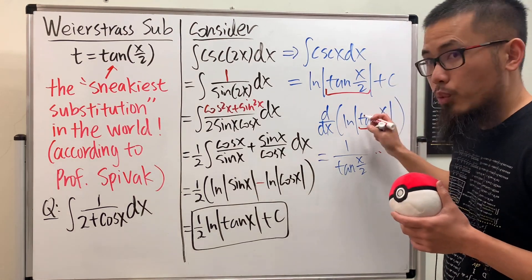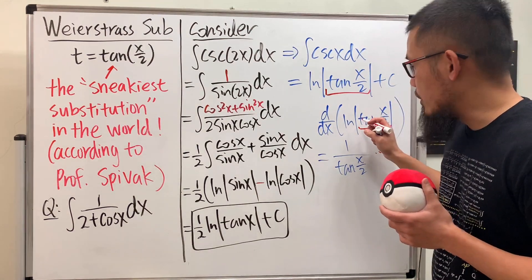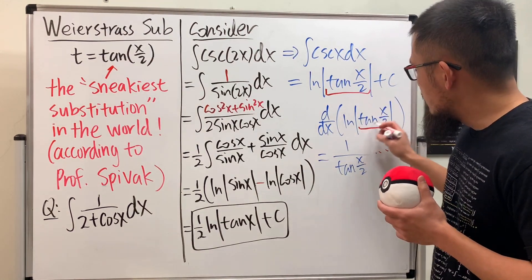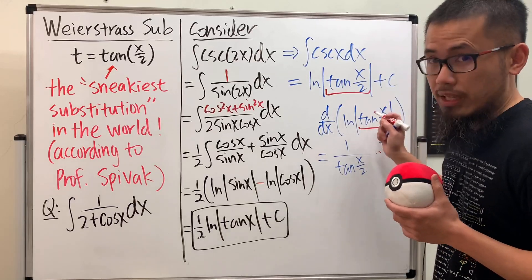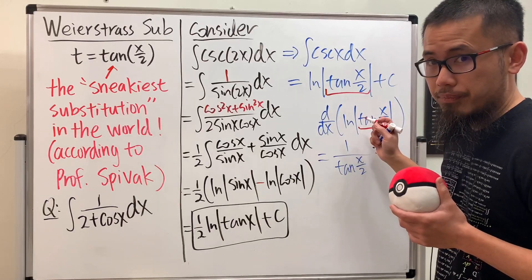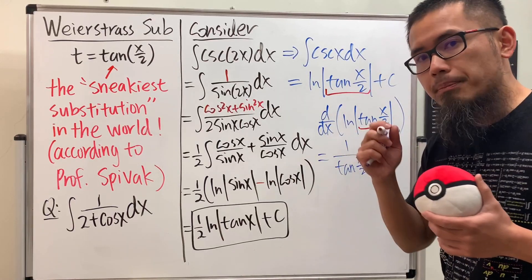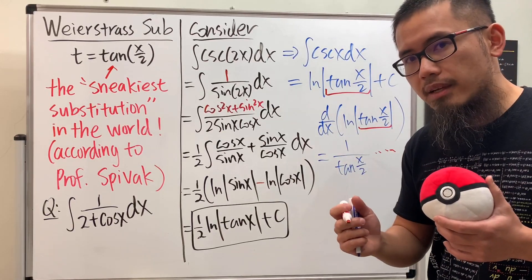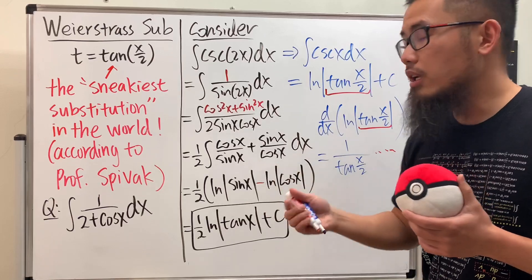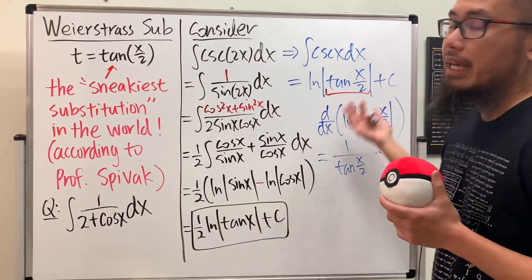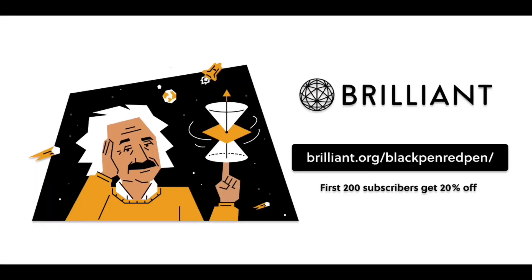Here's the deal: when we are doing differentiation, the place that we need to use the chain rule is the place that we have to do the u-substitution if you want to do the integral.